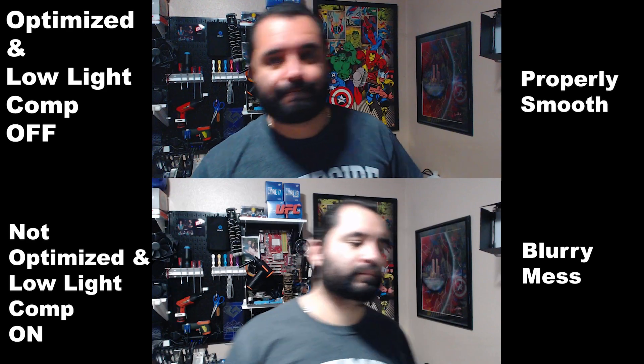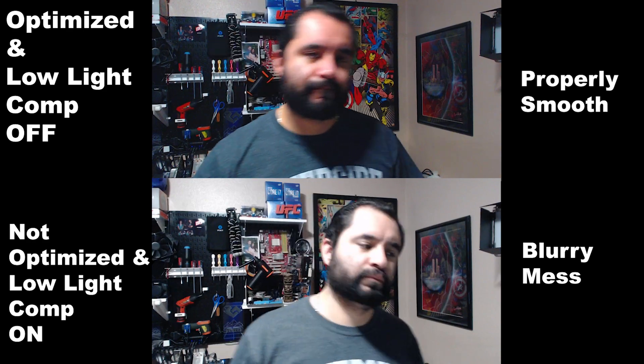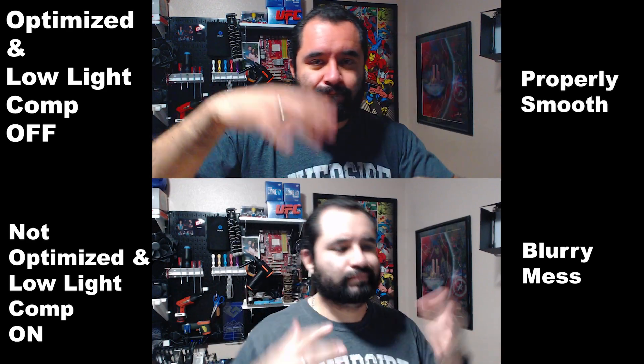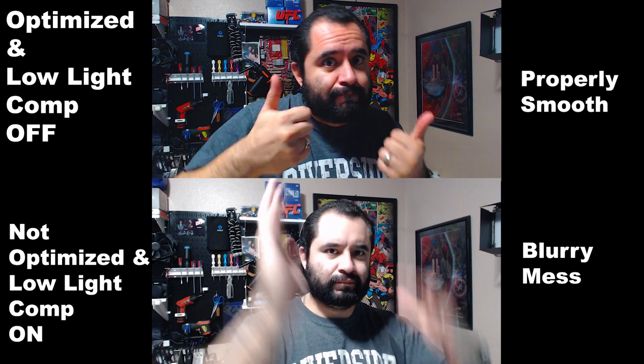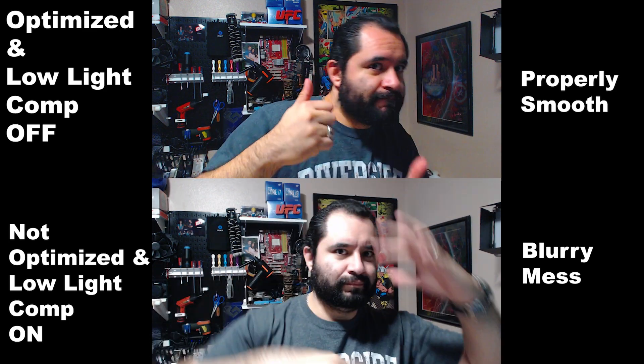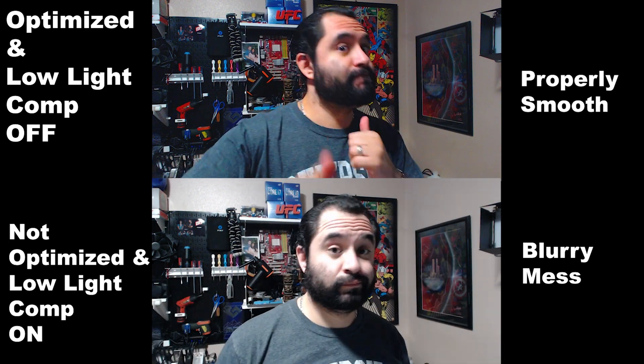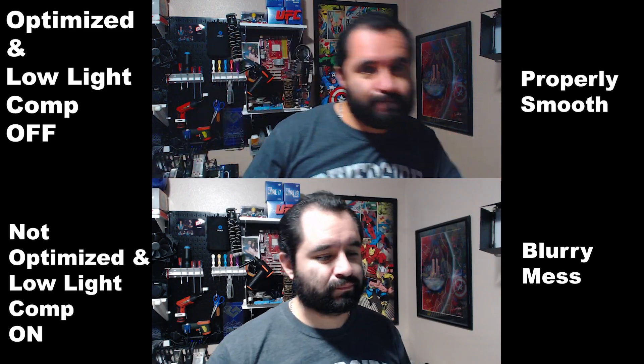The way low light compensation works is it tries to compensate for low light by lowering the shutter speed on the camera, which adds a lot of blur. The effect you see is really bad FPS — or the look of how something would appear if you were drunk.